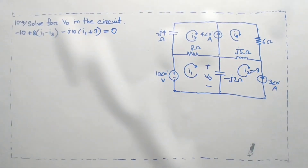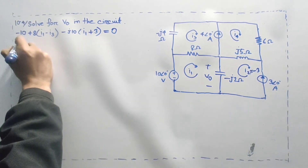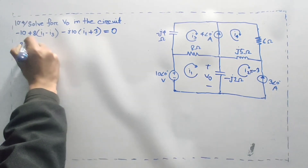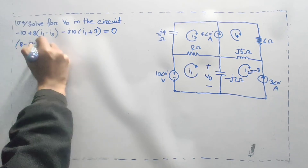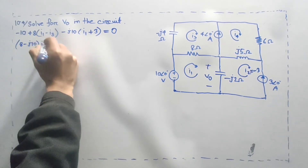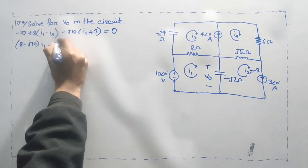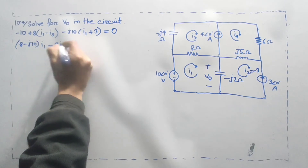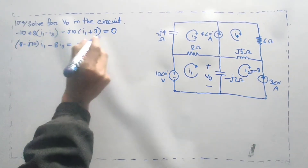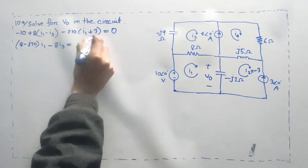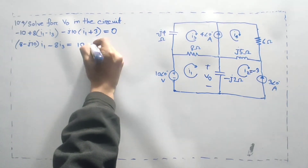I will have 8 minus j10·i1; i2 is equal to 0. Now I will have 8·i3: 10 plus 10 minus j30.